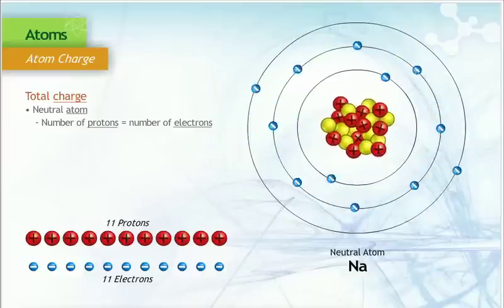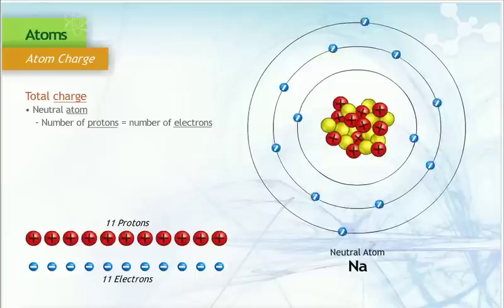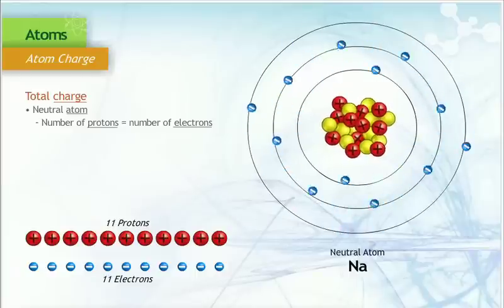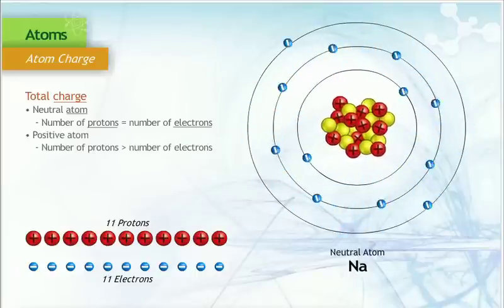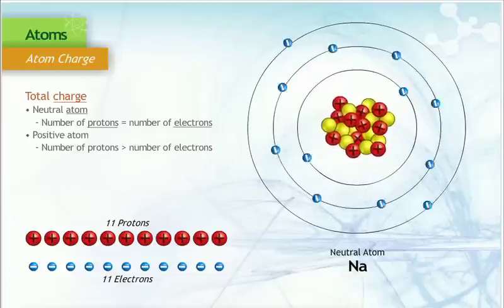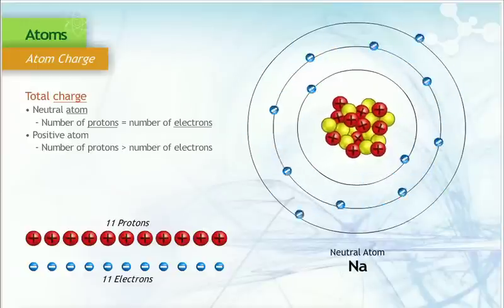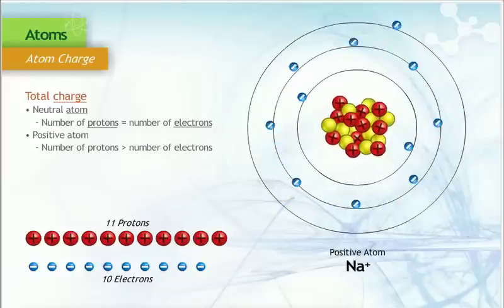Atoms can have different numbers of protons and electrons. When this happens, the charges do not balance. A positive atom occurs when there are more protons than electrons. Since there are more positive charges than negative charges, the atom has a positive charge. The result of adding the charges of both positive and negative particles is called the net charge.